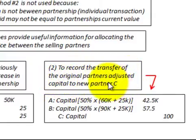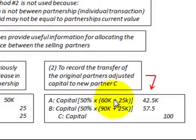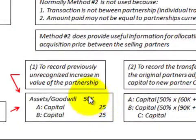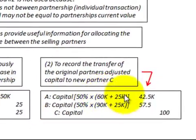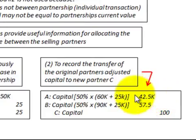For Partner A, we take 50% times their $60,000 capital interest plus the $25,000 increase in capital allocated to them for the goodwill/assets. So we take ($60,000 + $25,000) × 50%, which gives us $42,500 — that is the amount Partner A's capital account would be decreased by, or debited.